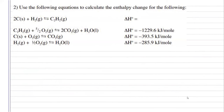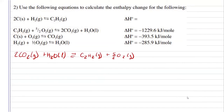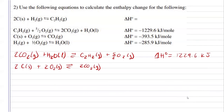For number two, we want to find the enthalpy for this reaction here, and these are our three steps. Let's see how we can manipulate. Right off the bat, my first reaction has my C2H2, which we want as a product. It has it as a reactant, so I know I'm going to have to flip it. Doing that will change my enthalpy from negative to positive. The second reaction has one mole of carbon dioxide, but I have two moles of carbon dioxide, so I know I'm going to have to multiply that one by two. Doing that will double my enthalpy to negative 787 kilojoules.